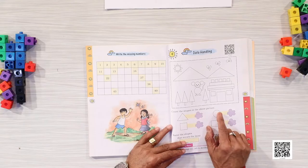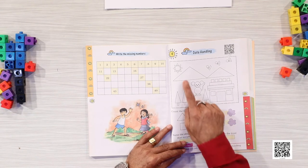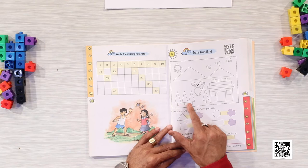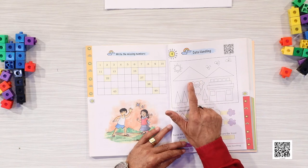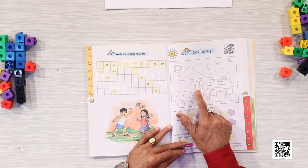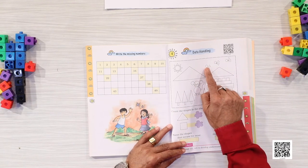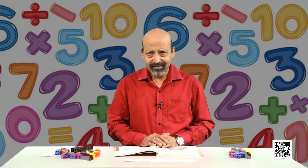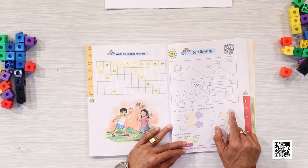Let us now count round shapes. How many such shapes are there? This is round number 1, 2, 3, then the face of the cat — so how many are these? 1, 2, 3 and 4, then this is 5, this is 6, this is 7. Is that all? No, one more round shape is here. So total round shapes are 8. We will write 8 here.